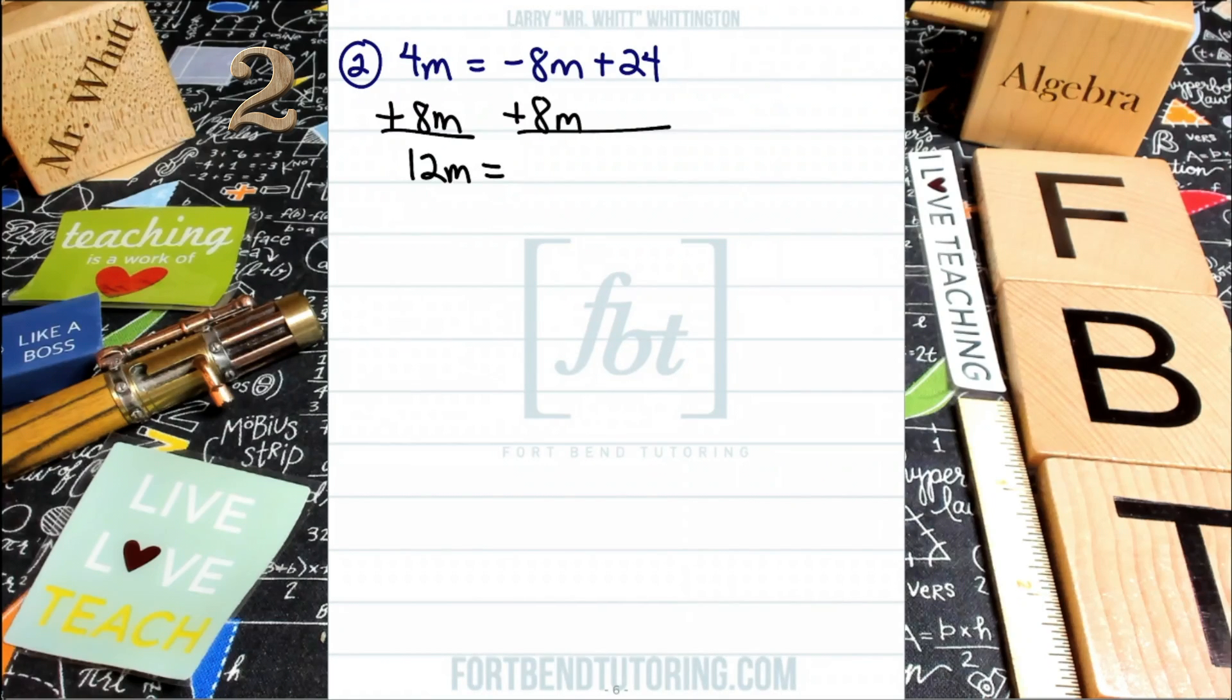Bring down that equal sign. You're now looking at additive inverses. That negative 8m and the positive 8m, well, they'll cancel out. Go ahead and cancel those m's out. Then we'll be bringing down the number 24.